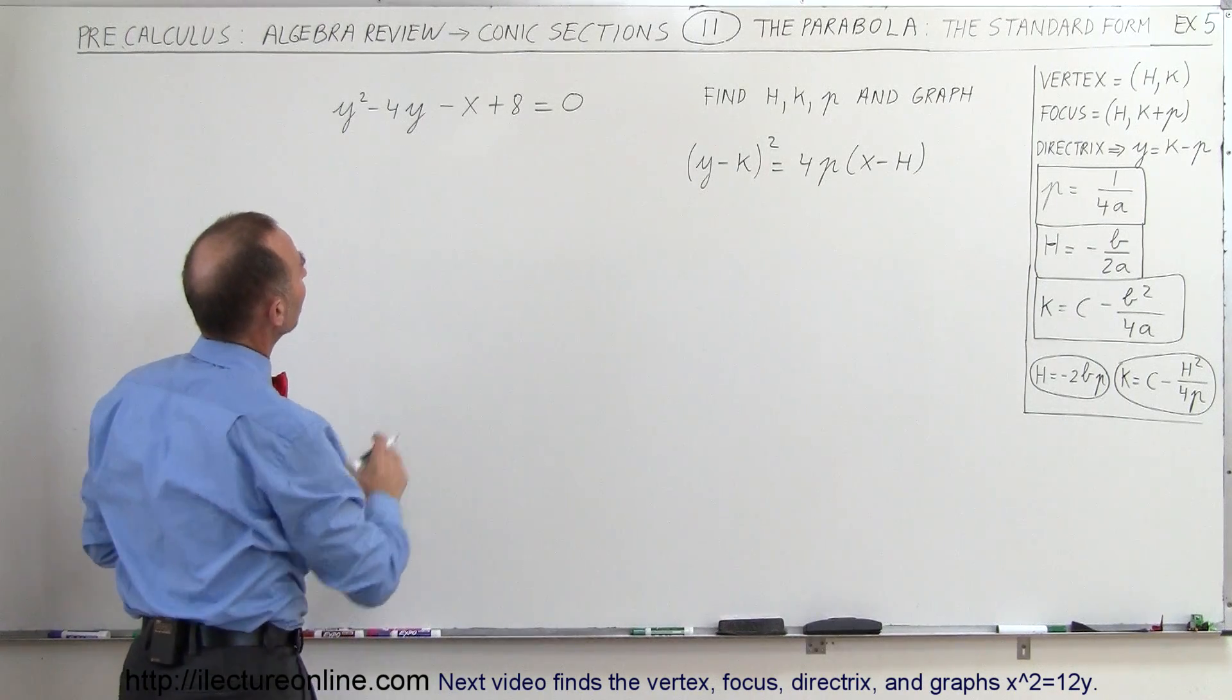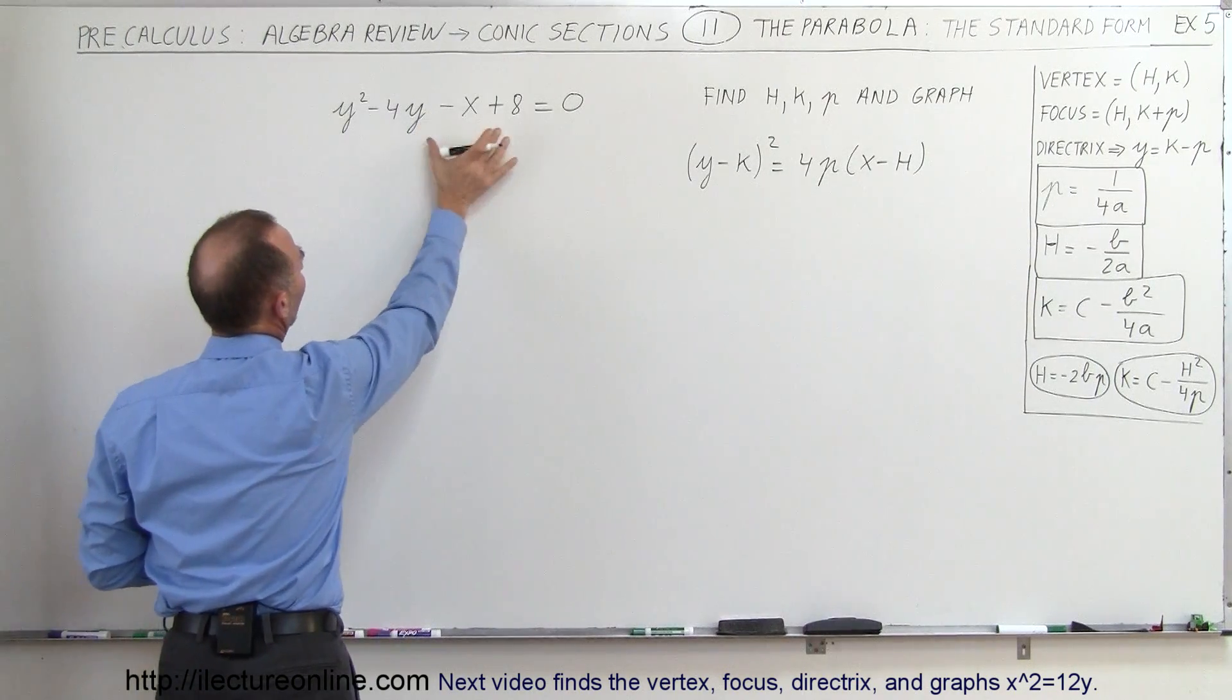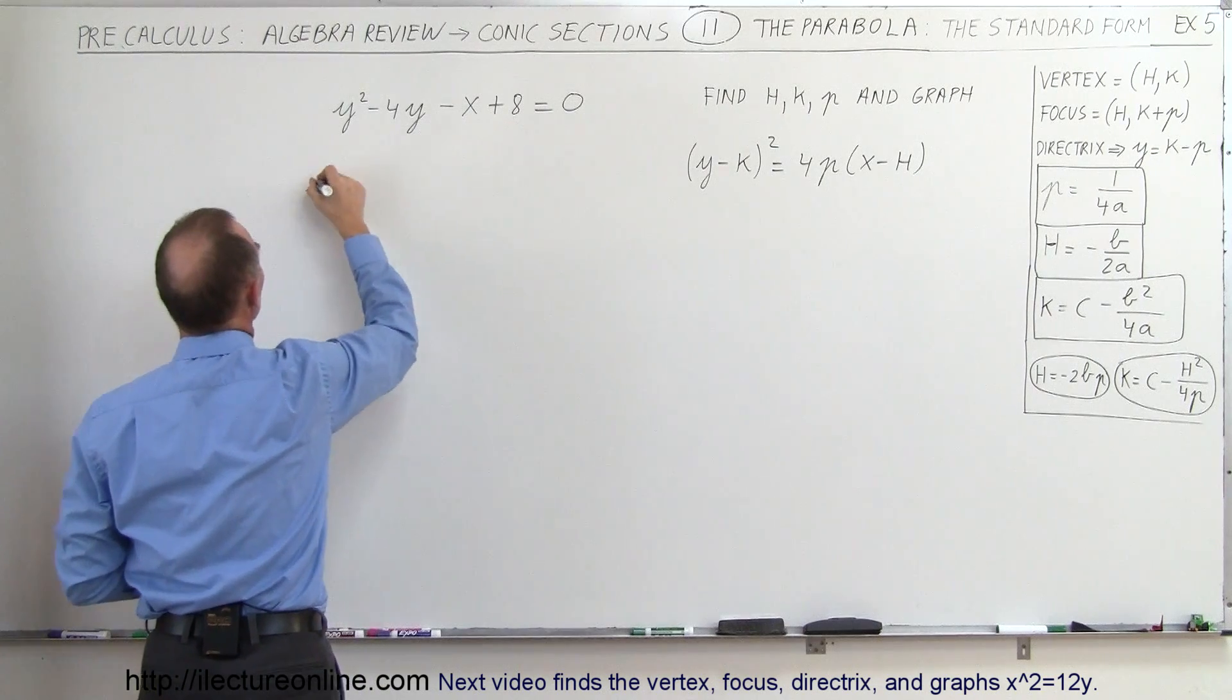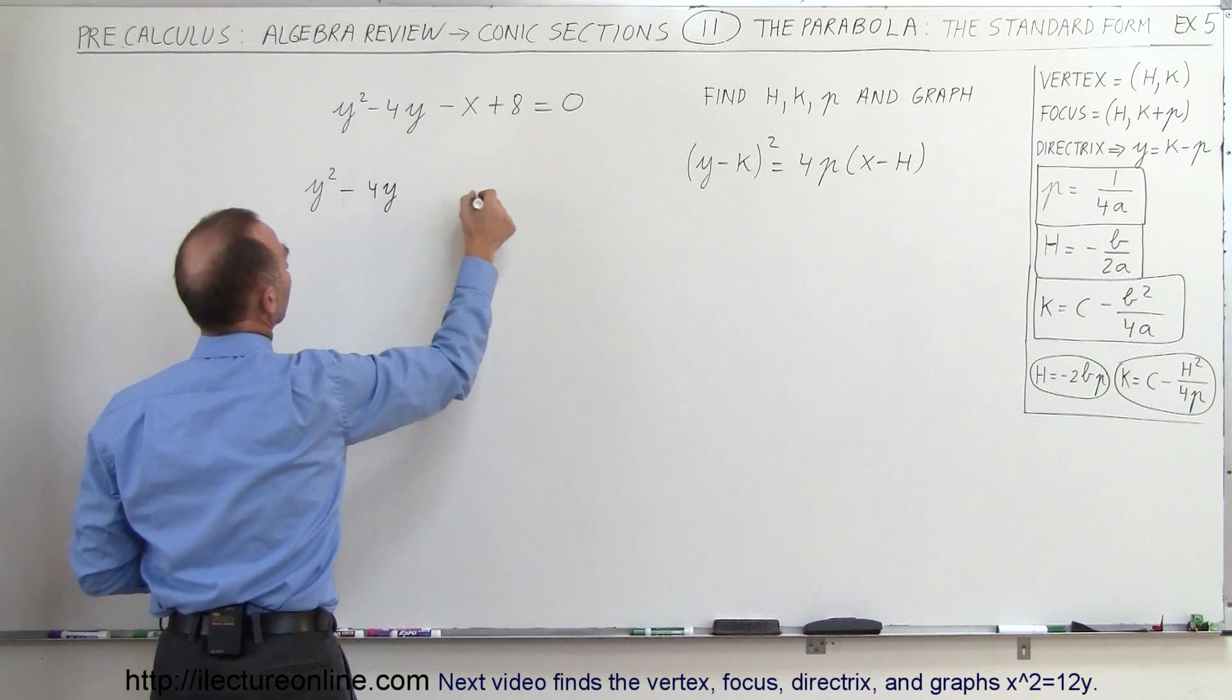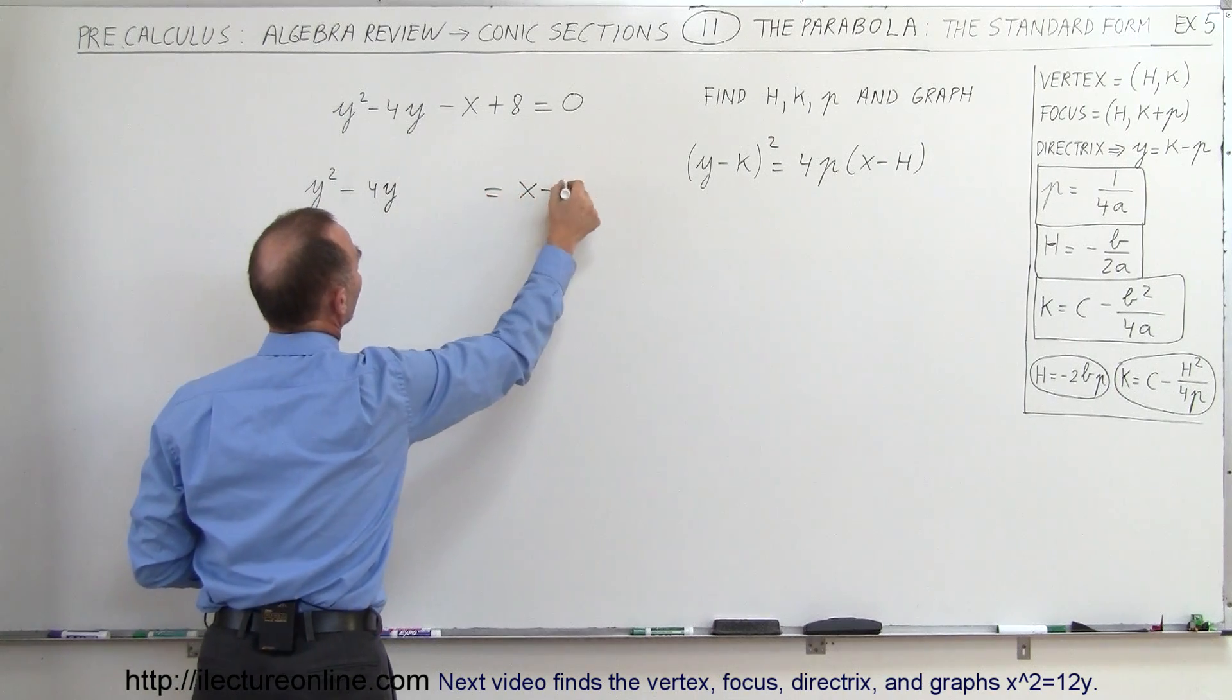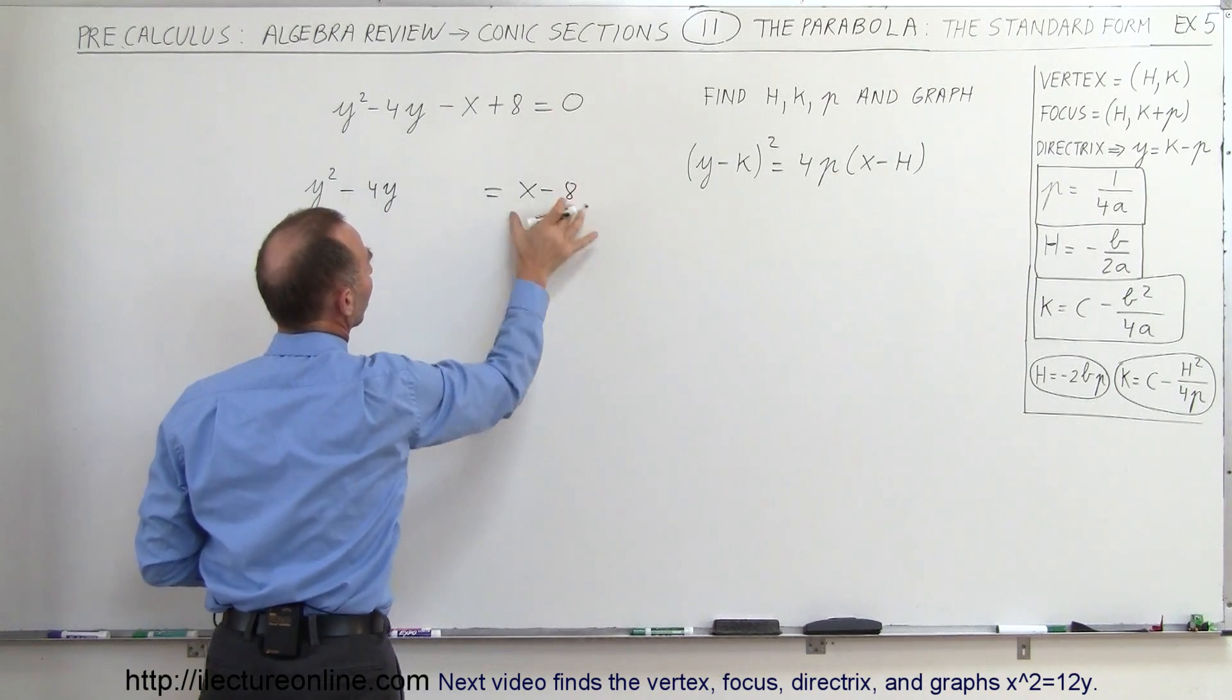Okay, let's keep this on the left side and move everything else to the right side, so we end up with y² - 4y equals x - 8. So we move it across the equal sign and the signs change.